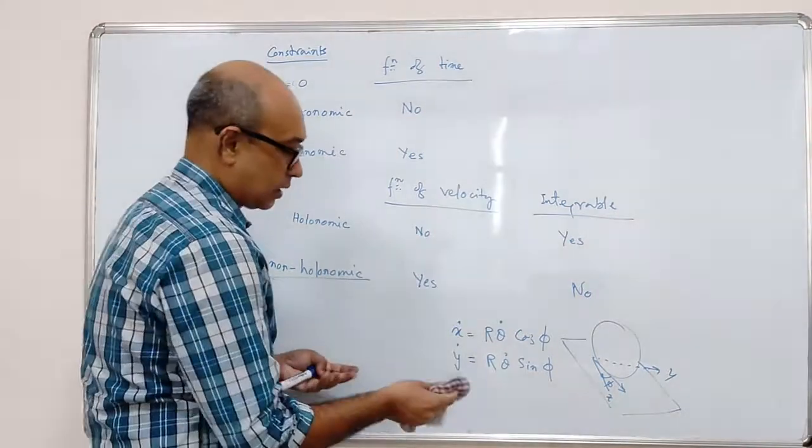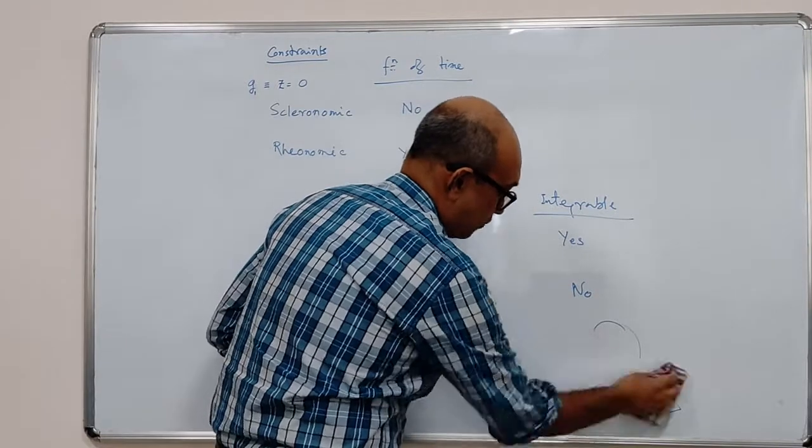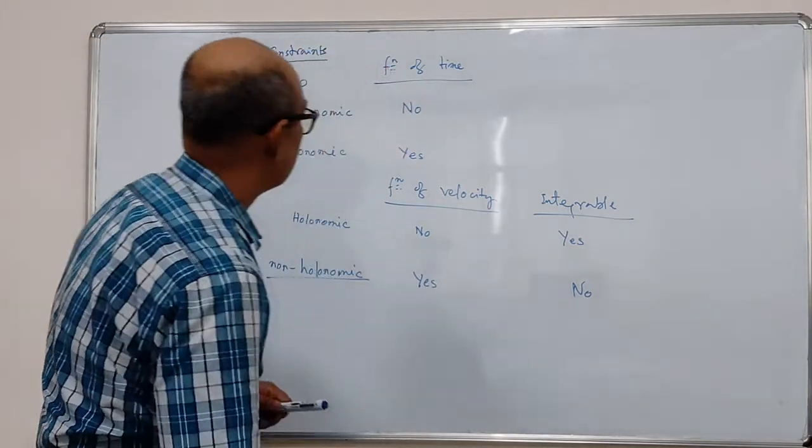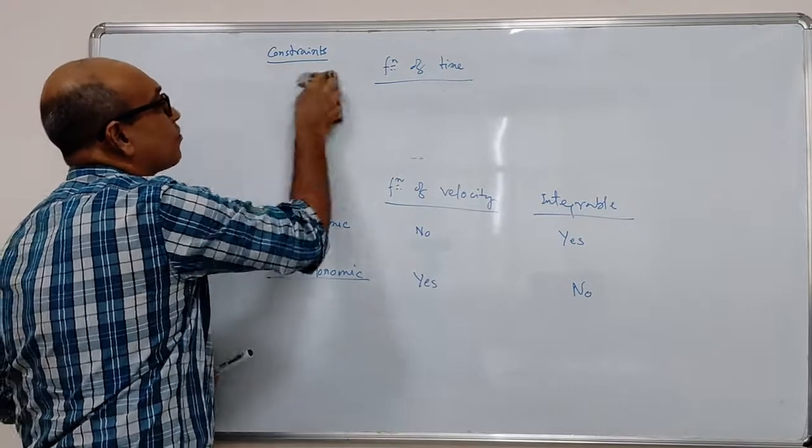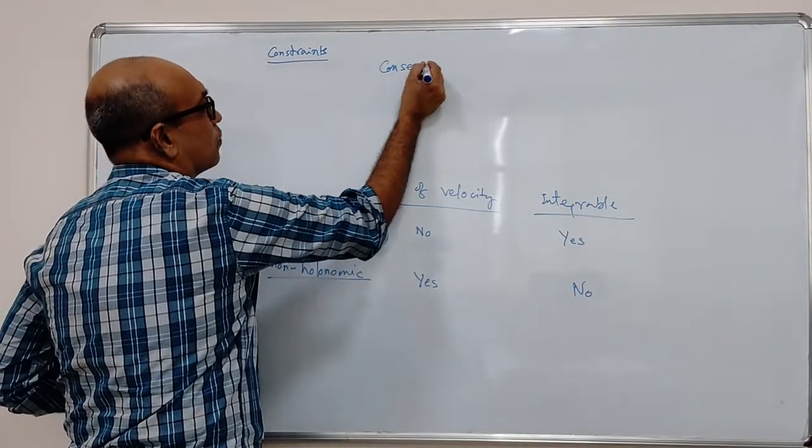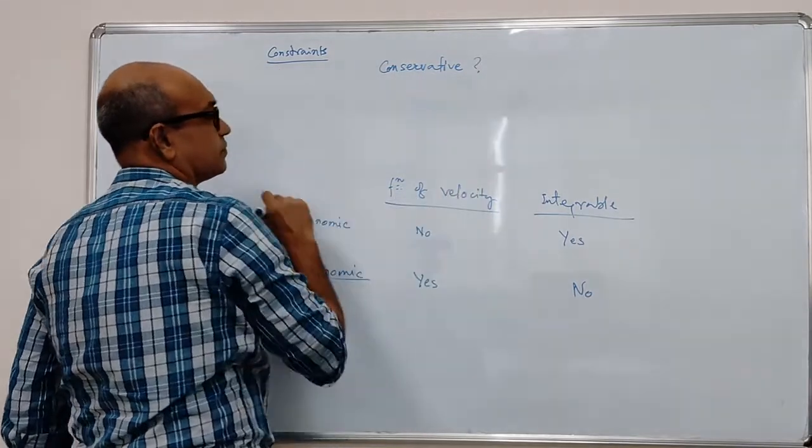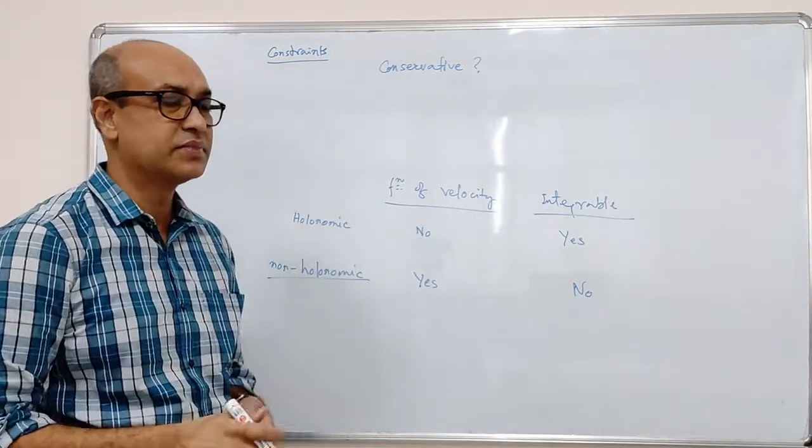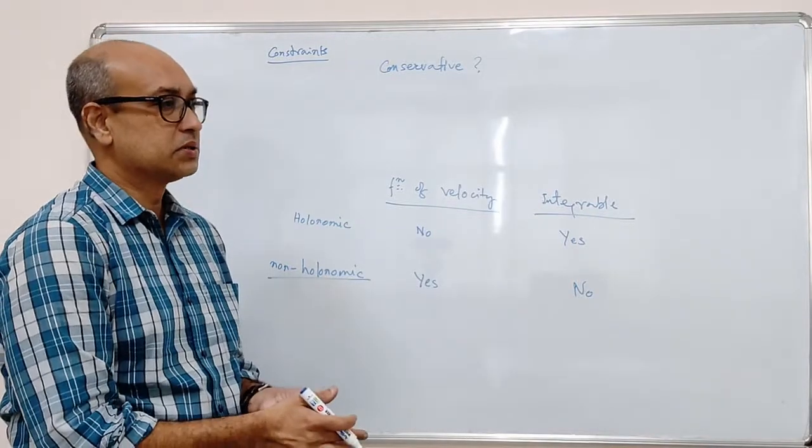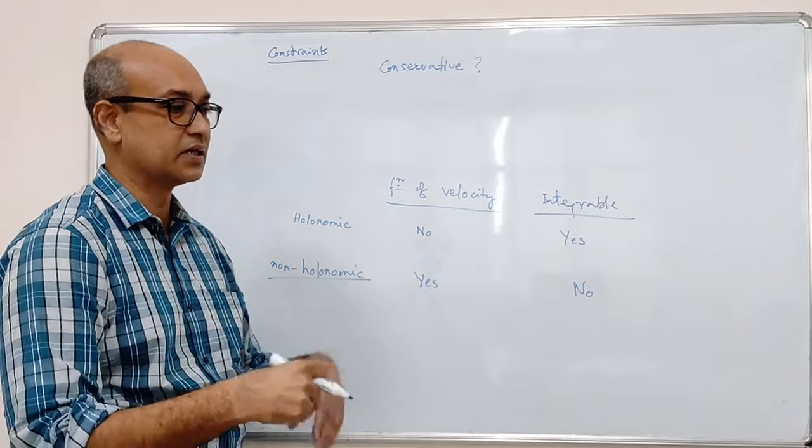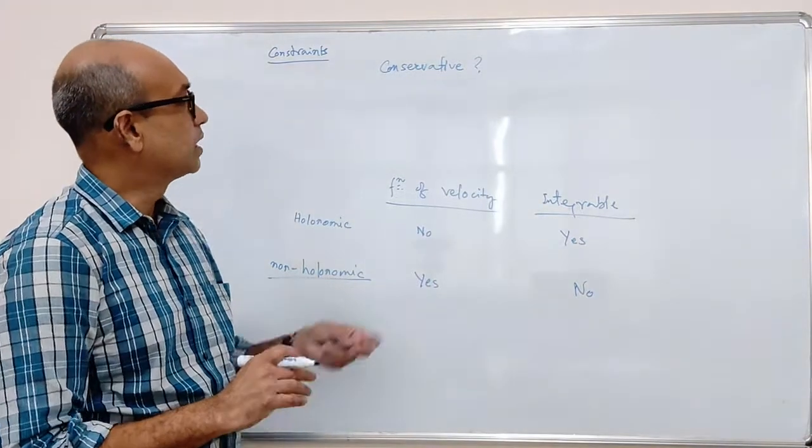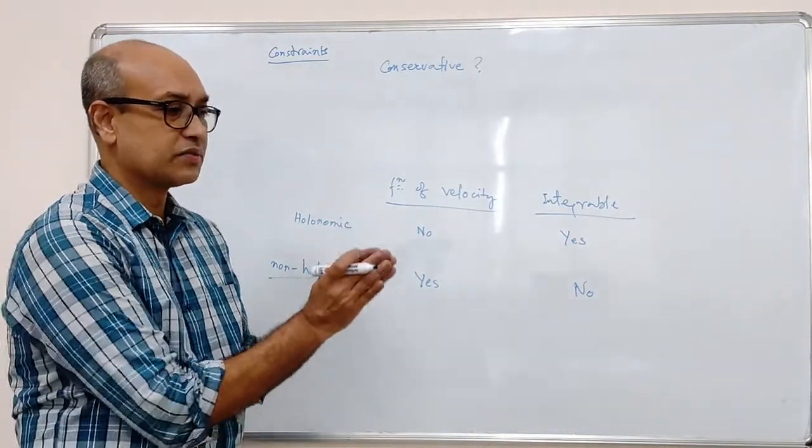Are there other classifications? Yes. There are two other ways we can classify the constraint. We can also ask this question whether the system is conservative or dissipative. The constraints are similarly named. If the system is conservative, then the constraint is conservative. If the constraint is such that the system dissipates energy, it gains energy or loses energy, although dissipation typically says that it is losing energy. In that case, probably a better nomenclature would be conservative and non-conservative.